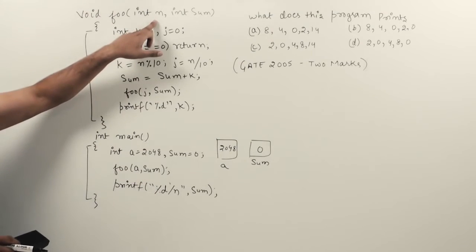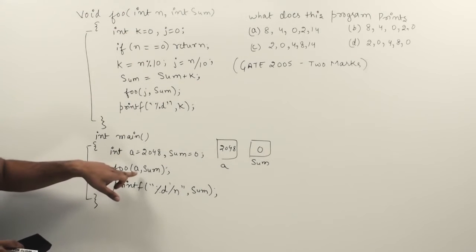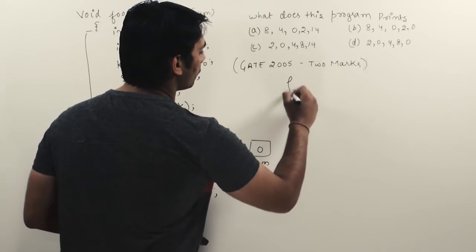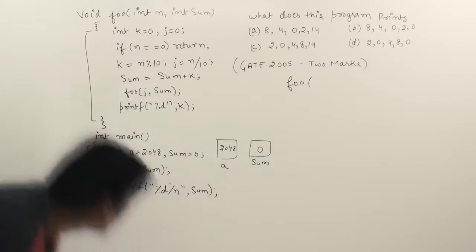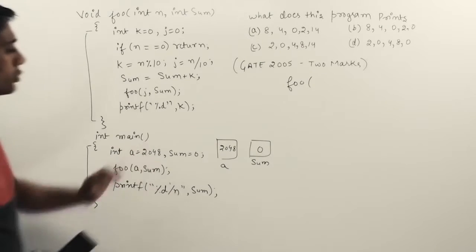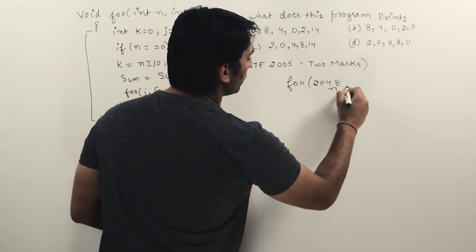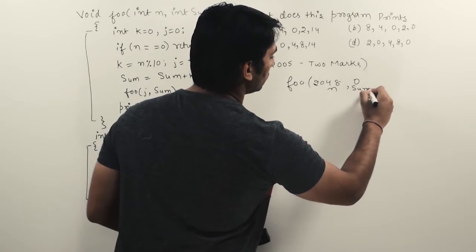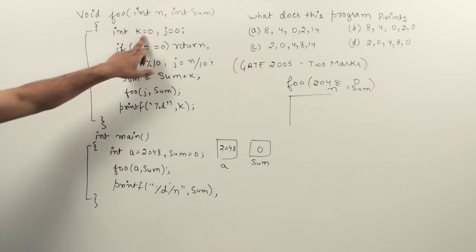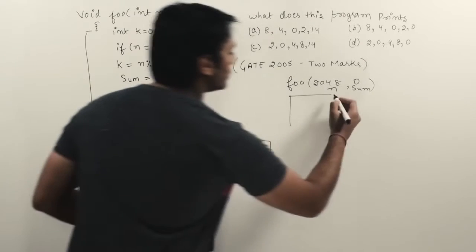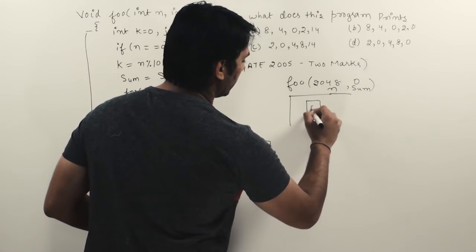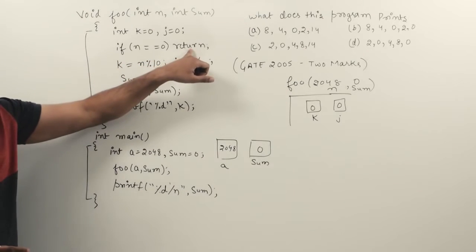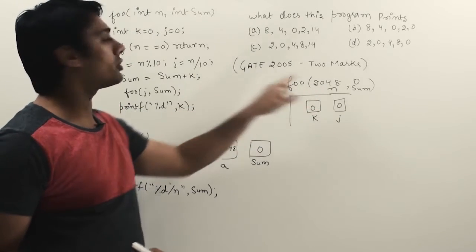These values will be copied into foo: the value of n will be 2048 and the value of sum will be zero. Inside foo there are two variables k and j, both initialized to zero. Since n equals 2048, which is not equal to zero, the base case return statement will not be executed.